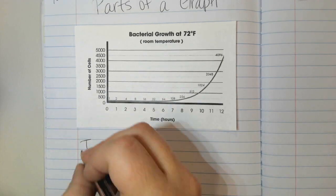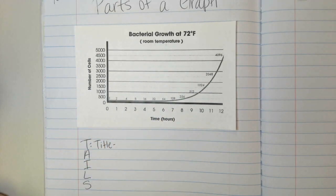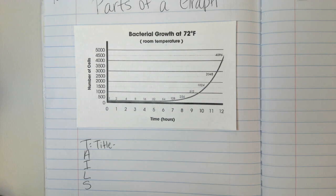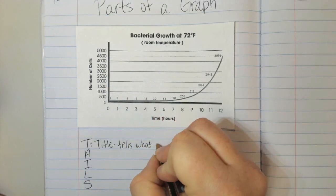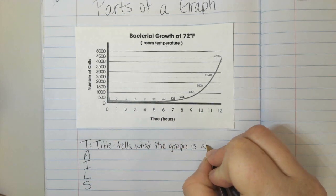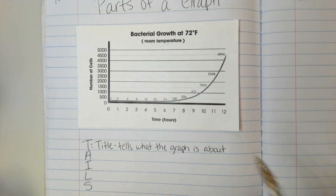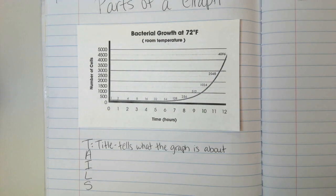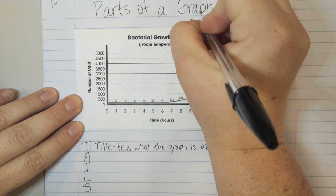The T stands for the title. The title, just like a book or a TV show, tells you what the graph is about. It tells you what you're looking at, what you can expect in the data. So we're going to say it tells what the graph is about. In this case, the title is bacterial growth at 72 degrees Fahrenheit. So we're going to draw a little arrow here. This is our title.